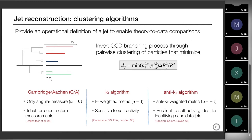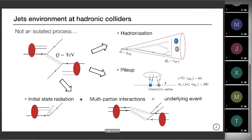At the LHC you cluster your particles with anti-kt and a given radius R, and this gives you how many jets you had in your event. This is how you compare theory to experiment. Now with these two things we can start computing observables, but let me mention first that this jet process doesn't occur isolated at hadronic colliders.